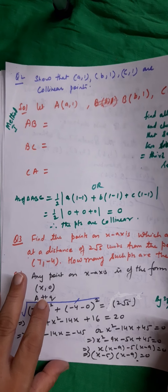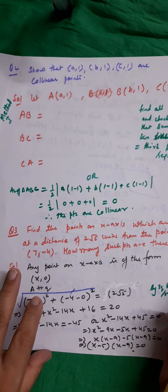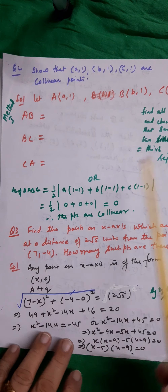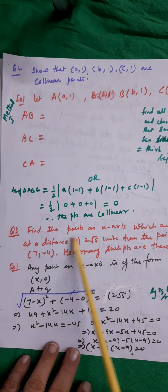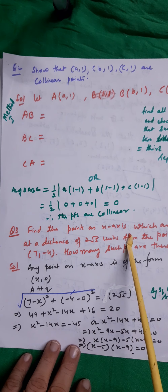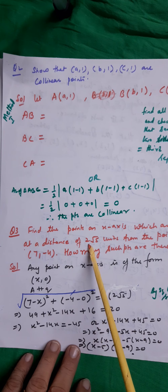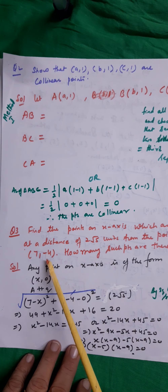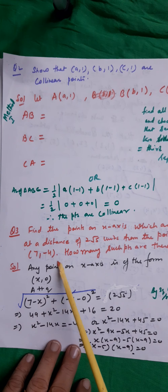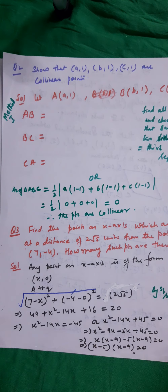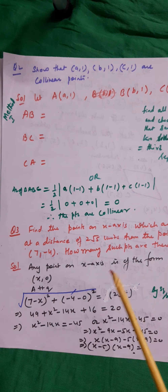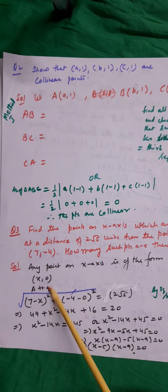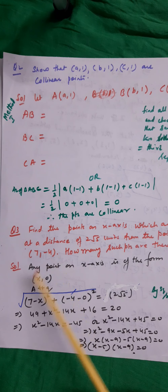Let us do a few more examples of distance formula to revise that as well. Find the points on the x-axis which are at a distance of 2√5 units from the point (7, −4). How many such points are there?